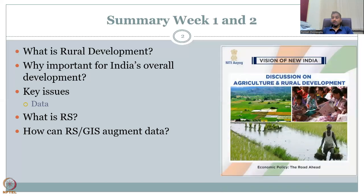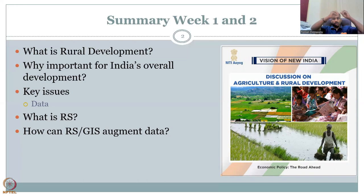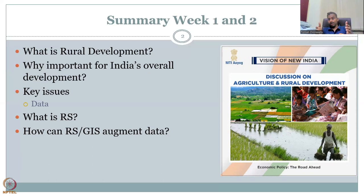This is also mentioned in the vision of New India by NITI Aayog, where there is a lot of discussion on agriculture and rural development. Agriculture is still the majority livelihood for rural regions, and for agriculture, water is most important. Rural areas focus on agriculture and livelihood options, which are driven by water and soil fertility.